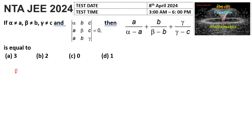Let's use the properties of determinants. The determinant is given as the matrix with rows (alpha, b, c), (a, beta, c), (a, b, gamma), which is equal to zero.